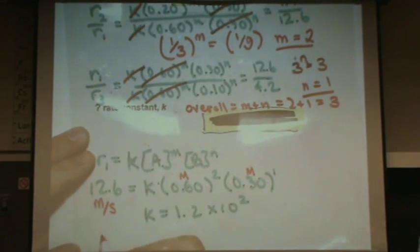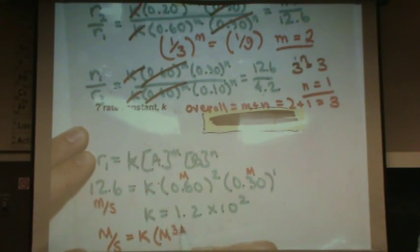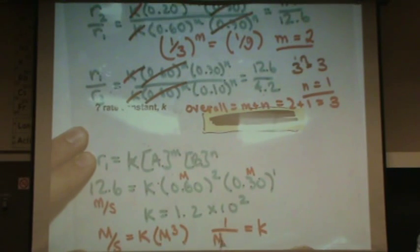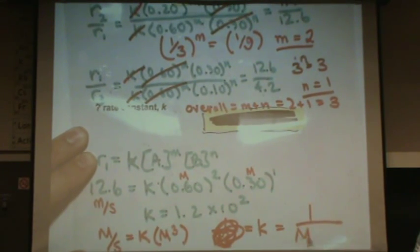So if you want the units: meters per second is going to equal k times molarity cubed. Or if we solve for k, k will equal 1 over molarity squared times seconds.